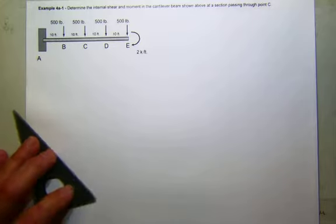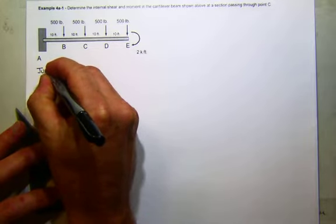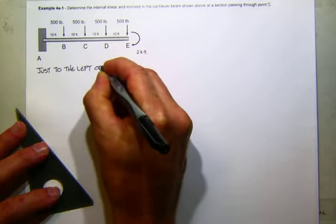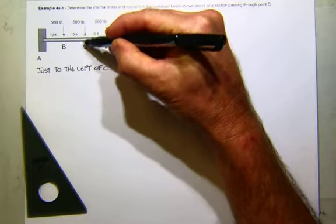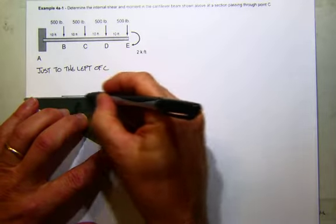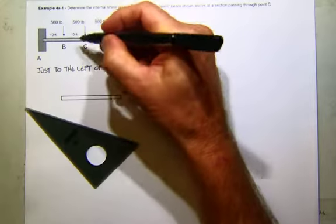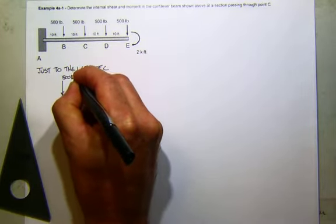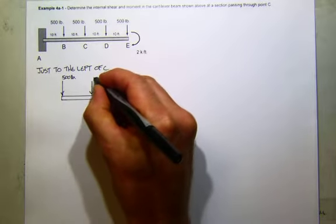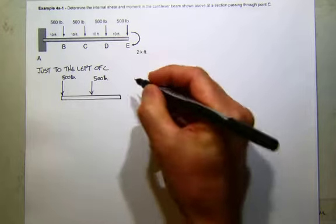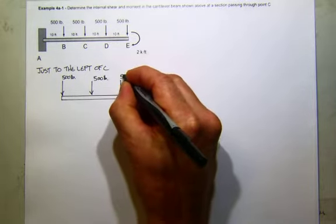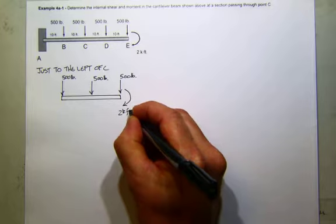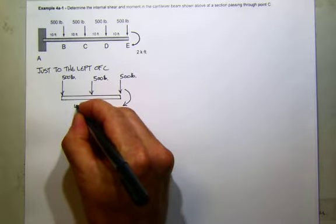So let's look at a cut just to the left of C. So that means I'll make my cut just here to the left. When I draw my free body diagram for that, since I'm cutting just to the left of C, I will include the 500 pound force at C. And then I'll have the 500 pound force at D, and out here on the cantilever at point E, I'll also have my 500 pound force. And then there's an applied moment at the end of 2,000 pound feet. And this distance will be 10 feet and 10 feet.